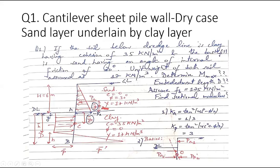In this problem, the soil below the dredge level is clay having a cohesion of 35 kN/m², and the backfill is sand having an angle of internal friction of 30 degrees. The unit weight of both soils is assumed as 17 kN/m³. We need to determine the maximum bending moment — this is critical because the sheet pile wall has a thinner section. We also need to find the embedment length and section modulus, given the flexural strength.